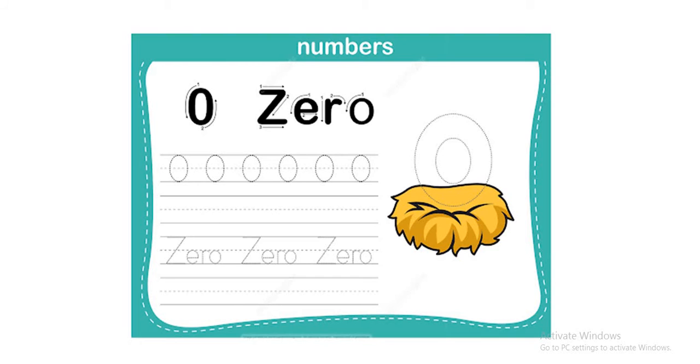Zero doesn't mean with zero, it means nothing or any zero. So how can I write number 0? I write 0 in standard form like this.